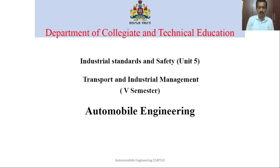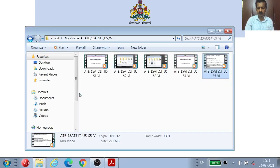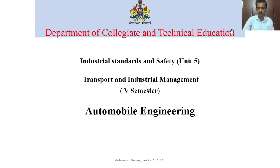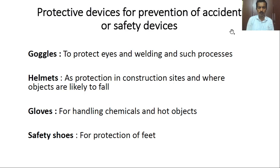The sixth section of industrial standard and safety covers protective or safety devices. Protective devices for prevention of accidents — different safety devices will be used for protecting different parts of the body.